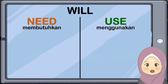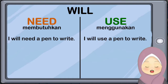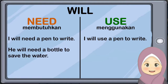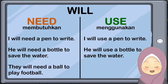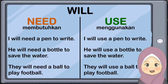For example: I will need a pen to write. I will use a pen to write. Saya akan membutuhkan sebuah pulpen untuk menulis. Saya akan menggunakan sebuah pulpen untuk menulis. He will need a bottle to save the water. He will use a bottle to save the water. They will need a ball to play football. They will use a ball to play football.